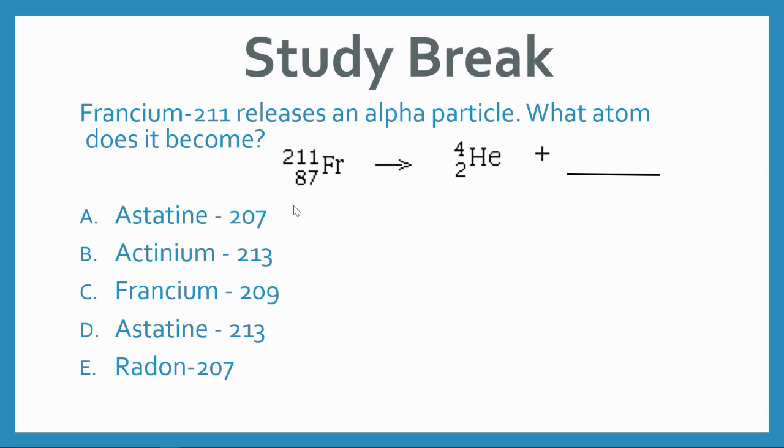Let's fill in this blank. If Francium-211 releases an alpha particle, what atom does it become? Well, if it's releasing an alpha particle, we know it's going to release four total subatomic particles.